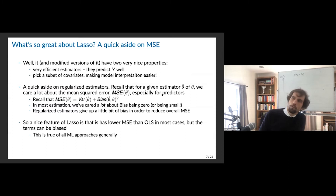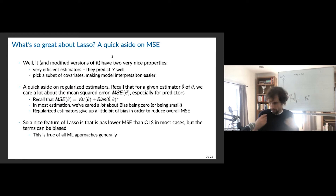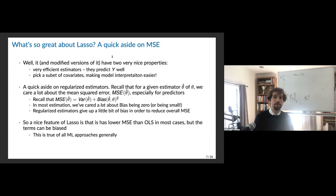So what's so great about LASSO? LASSO and modified versions of LASSO are very efficient estimators — they do a good job of predicting Y well. The other nice part is that they pick a subset of covariates, making the model interpretation easier. If you run a regression with a hundred things, it's very challenging to interpret the coefficients. If lasso only picks three things for you, that makes it a lot easier to talk about which ones are the most important for predicting your outcome.